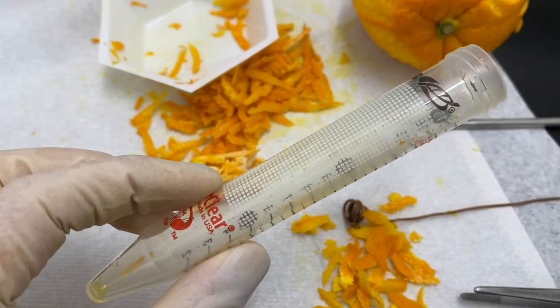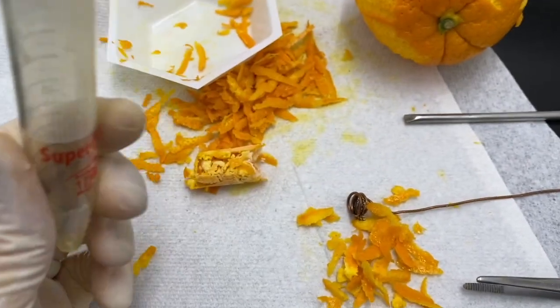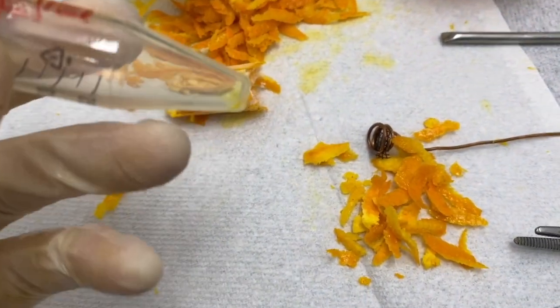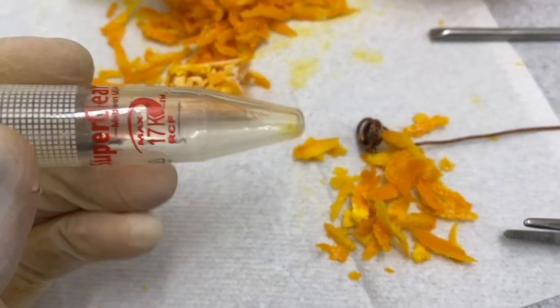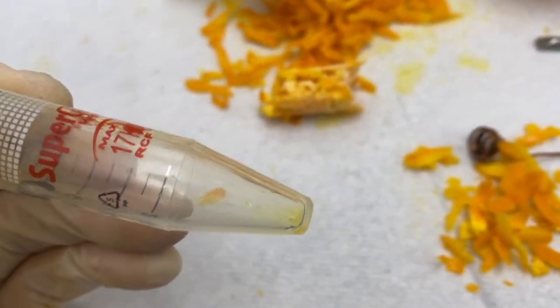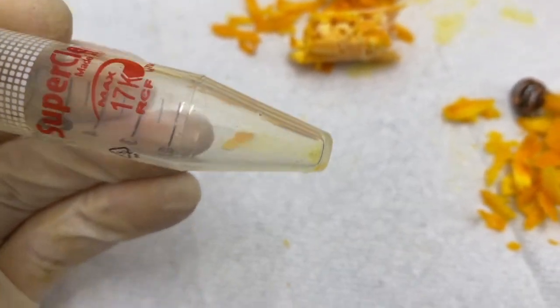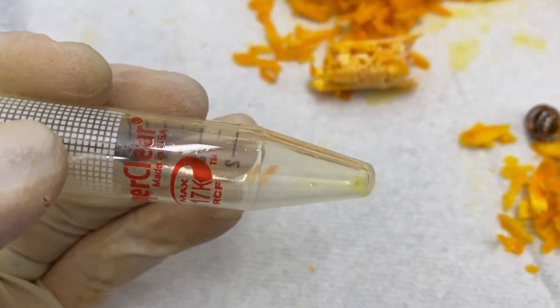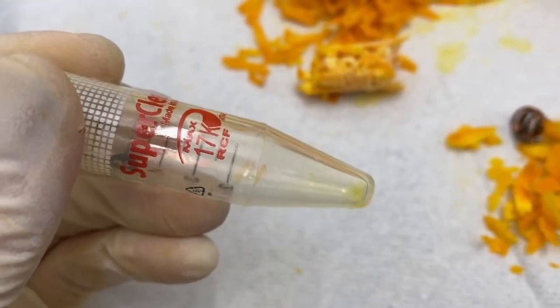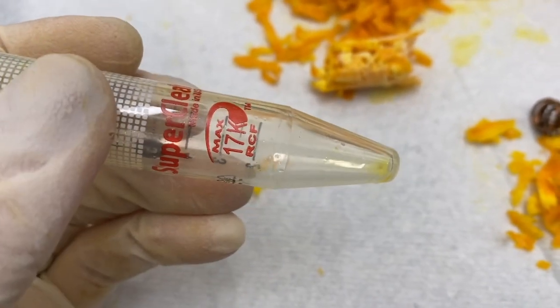Now that we've done those three extractions, I was able to pull out all of that orange rind and very carefully took out that piece that settled to the bottom. Now you see we have just that little oil sitting at the bottom of our tube, which we'll get a mass of so we can get a mass by difference to get our mass of the oil only.